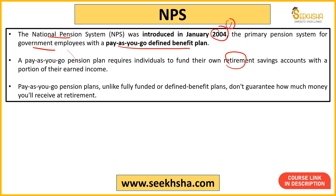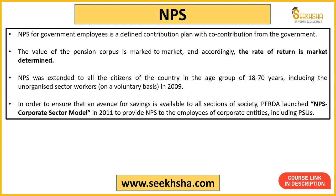In a fully funded or defined benefit plan, the employer contributes all the money. In pay-as-you-go, how much you receive after retirement is decided according to your contribution. In NPS, along with the employee's contribution, the government also makes an equivalent co-contribution. The value of the pension corpus is market-to-market — it depends on which market the NPS money is ultimately invested in and its rate of return. You can also decide in which area you want your NPS money invested.